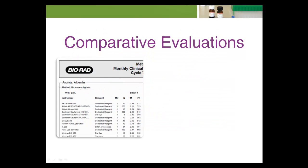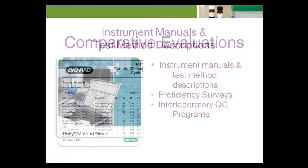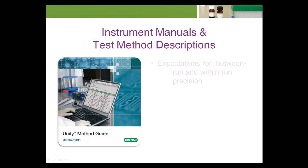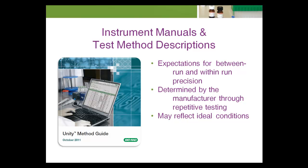There are several sources that provide performance expectations to which the laboratory can compare its standard deviation. These include the instrument manual or test method description, proficiency surveys, and interlaboratory QC programs. Instrument manuals and test method descriptions publish expectations for between-run and within-run precision. These expectations are determined by the manufacturer through repetitive testing and may reflect ideal conditions. If the method description defines a between-run precision of 0.1 millimole per liter for potassium, the laboratory performance meets manufacturer specifications. If, however, the between-run specification is 0.05 millimole per liter, then the calculated standard deviation indicates the laboratory is less precise than the manufacturer's expectation.